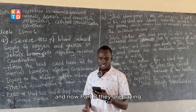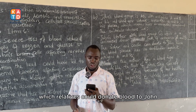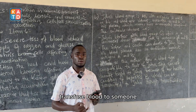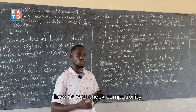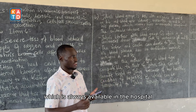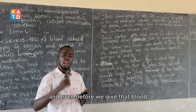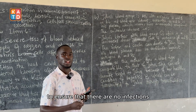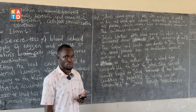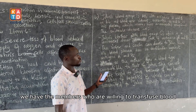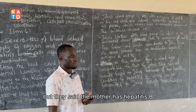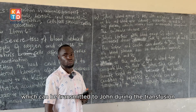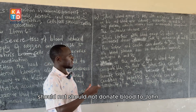For part B — without referring John to another hospital, which relatives could donate blood? In blood transfusion, blood must be compatible. You check blood groups for compatibility and also screen for infections to ensure nothing transmittable is passed to the recipient. Looking at the relatives willing to donate: the mother has hepatitis B, which can be transmitted to John during transfusion, so the mother is immediately excluded and should not donate blood to John.